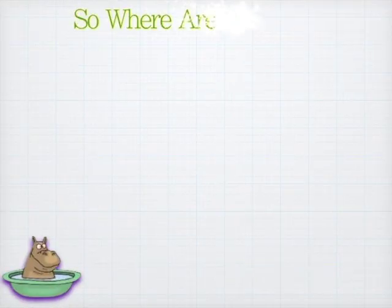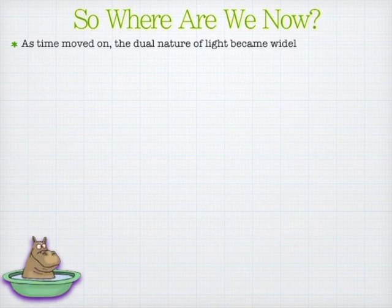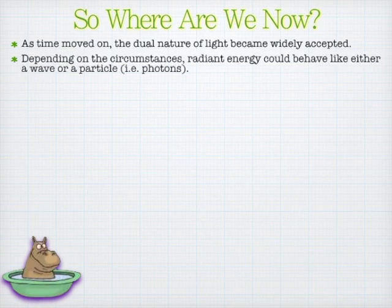By this time in modern atomic theory, the idea of the dual nature of light became widely scientifically accepted, if not well-liked. It's very confusing that light, depending on the experiment, could act like a particle or a wave.